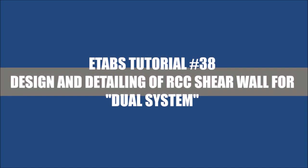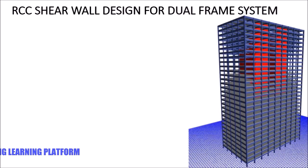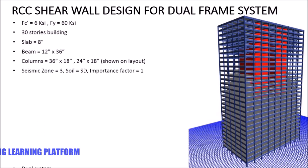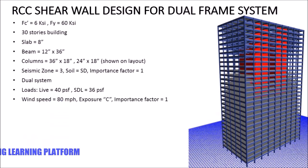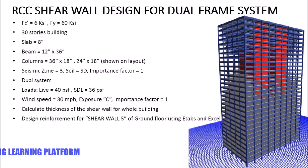In this video, I am going to show you the complete design and detailing of reinforced concrete shear wall for a dual system. The given parameters are FC' 6 KSI and FY 60 KSI. It is a 30-story building. The slab is 8 inches thick, beam size is 12 by 36 inch, column size is 36 by 12, 18 and 24 by 18 as shown on layout. The seismic zone is 3, soil type SD, and importance factor of 1. It is a dual system; the live load is 40 PSF and SDL is 36 PSF. The wind speed is 80 miles per hour for exposure C and importance factor of 1. We have to calculate the thickness of the shear wall for the whole building and design reinforcement for shear wall 5 of the ground floor using E-tabs and Excel checks, and the detailing using AutoCAD.